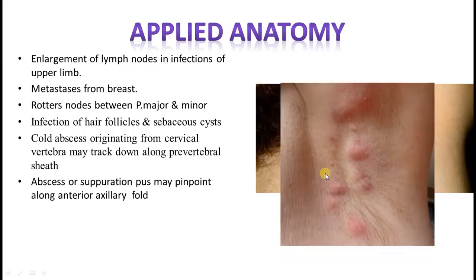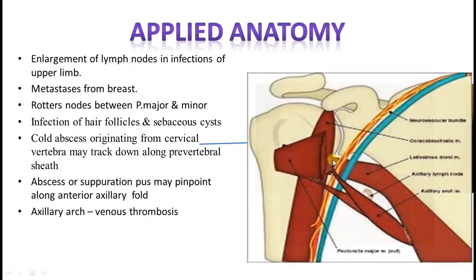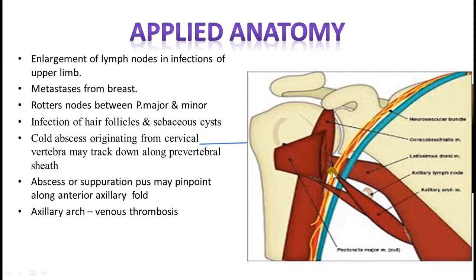The axillary arch: here you are able to see a separate slip of muscle from the latissimus dorsi. From the latissimus dorsi to the pectoralis major, in between an additional slip might be present — an additional origin or insertion, because the latissimus dorsi is originally a muscle of the upper limb which has migrated backwards. This is called the ligament of Struthers or axillary arch. When this is present, it might compress your axillary vein and lead to venous thrombosis — thrombosis of the vein, because this extra slip or axillary arch might compress the axillary vein.